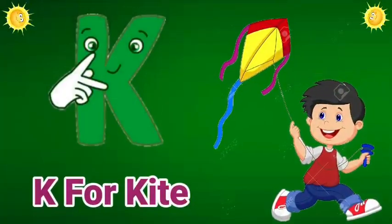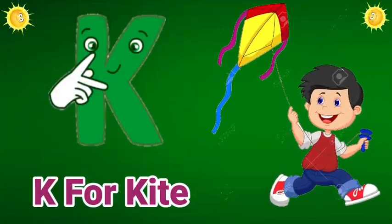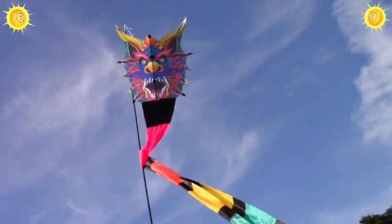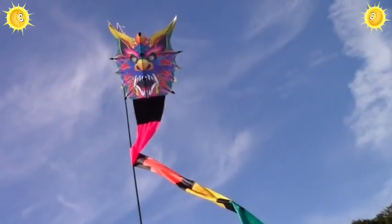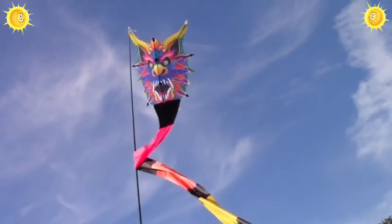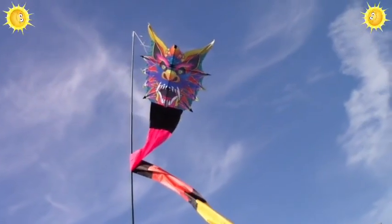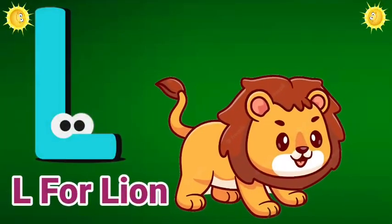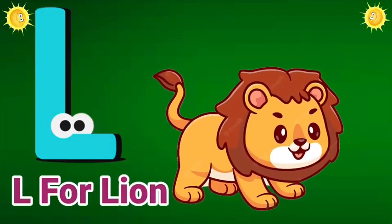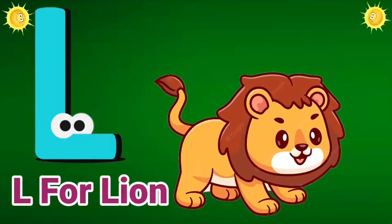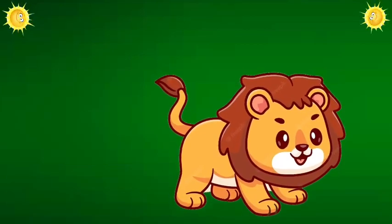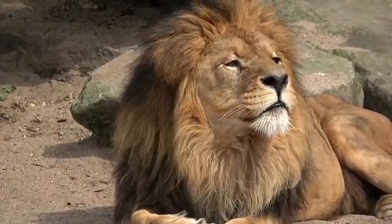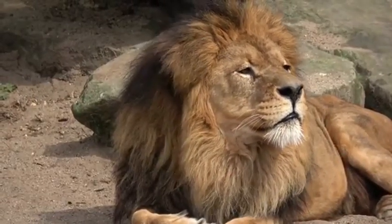K for kite. Kite means bataang. L for loyan. Loyan means sea.